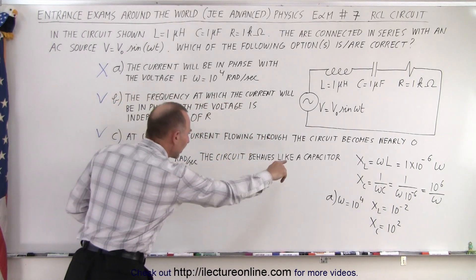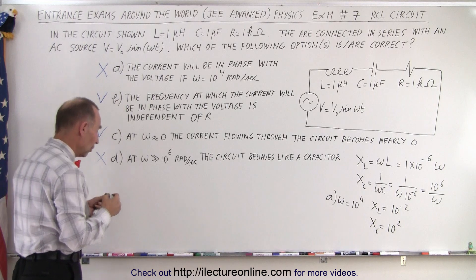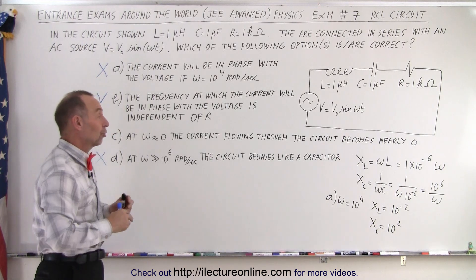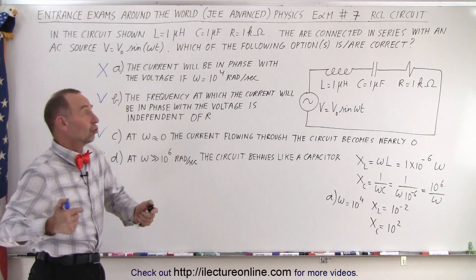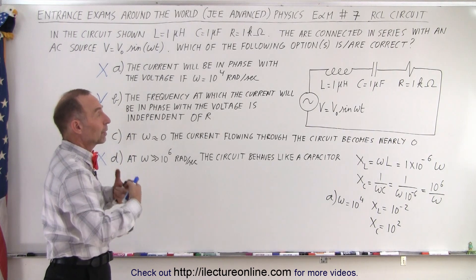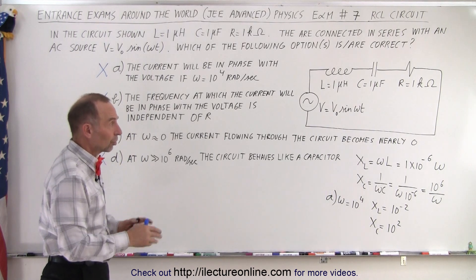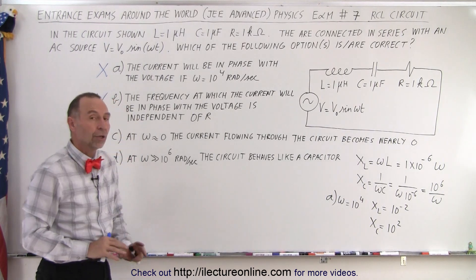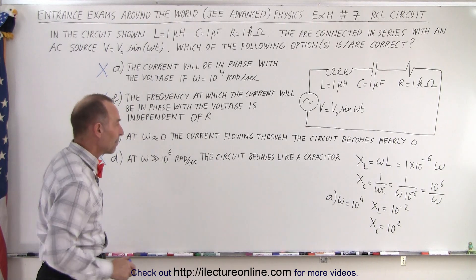This is an incorrect statement. When omega becomes very large, the circuit behaves like an inductor circuit. The inductor takes over, becomes the most important component in the circuit, and it will really hold back the current, so it will not act like a capacitor.